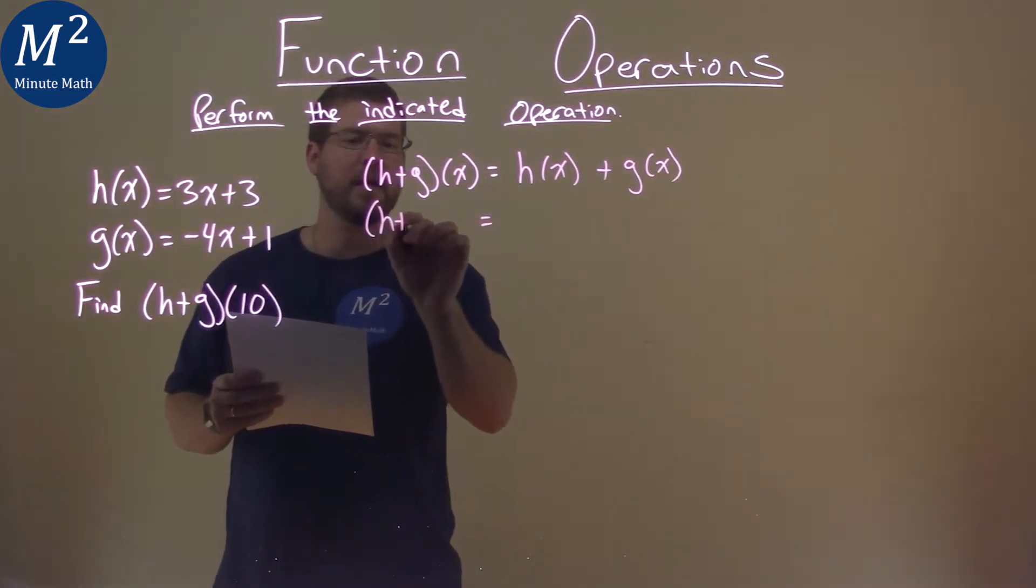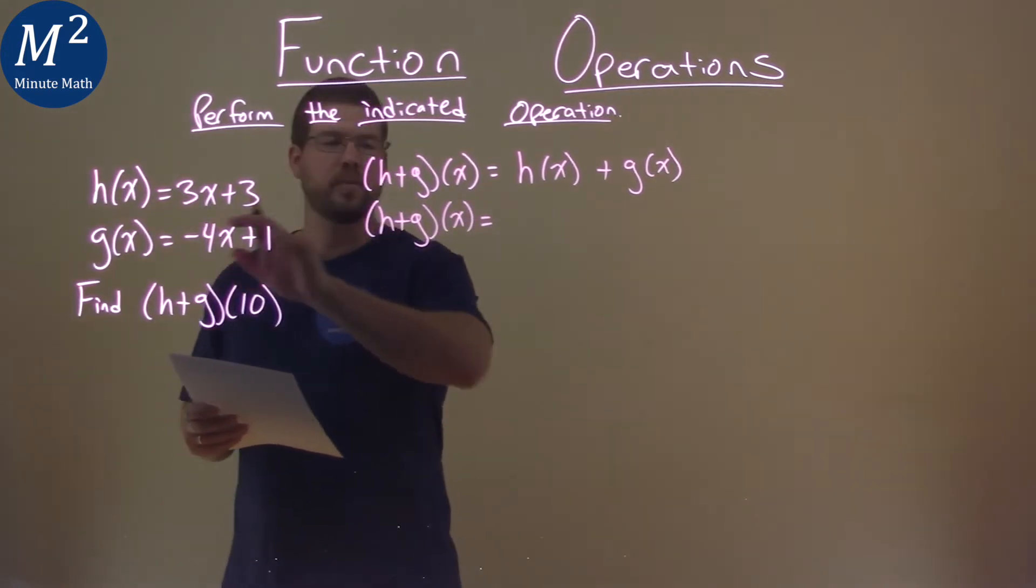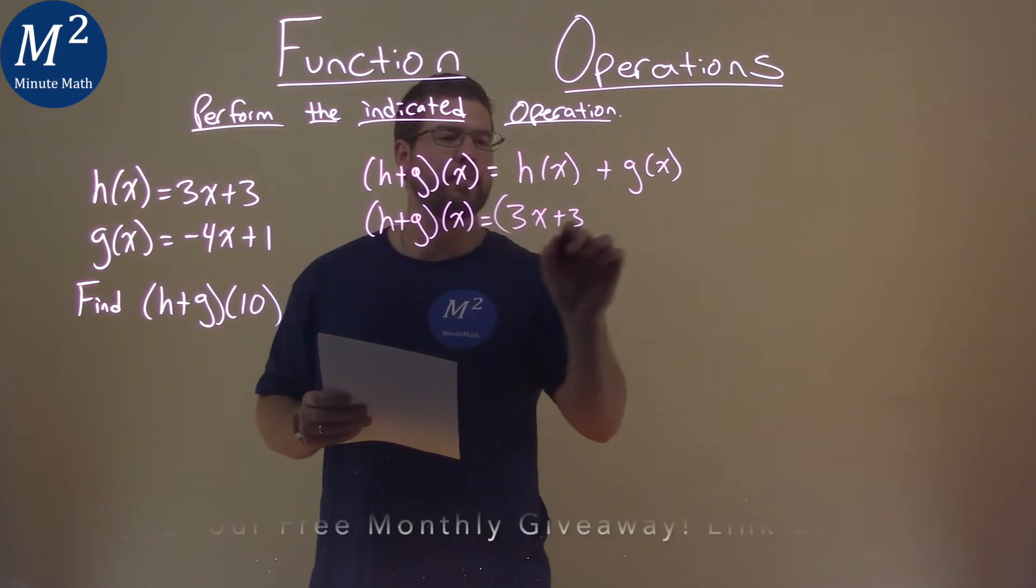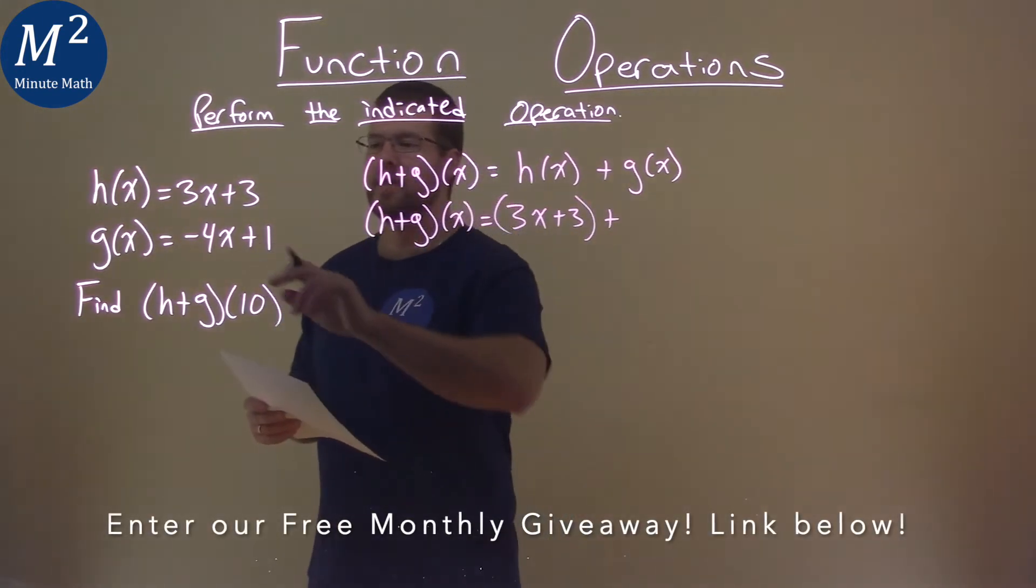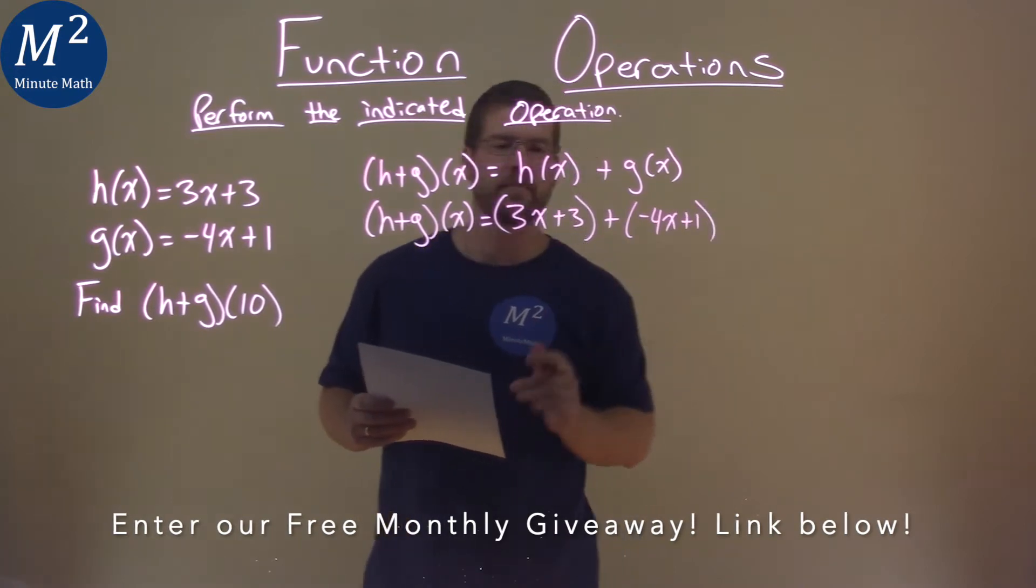So, labeling it out, h(x) is 3x plus 3, and g(x) is negative 4x plus 1.